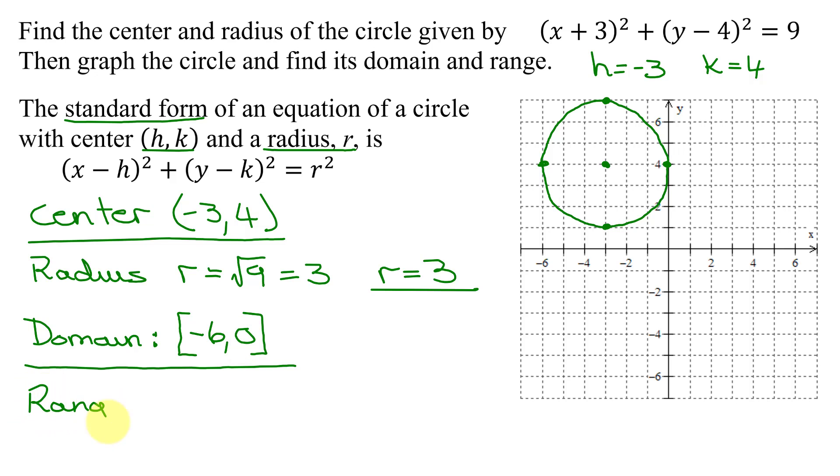Lastly, the range. Those are the y values. Coming up from y equals negative infinity, the first y value we hit is this point here, where y equals 1. So it's square bracket 1, comma, all the way up to this point where y equals 7. So the range is [1, 7].